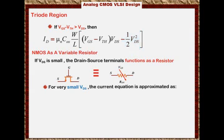Then ID can be approximated to be μn Cox W over L times (VGS minus threshold voltage) times VDS. And what we did, we ignored the minus one-half VDS squared.